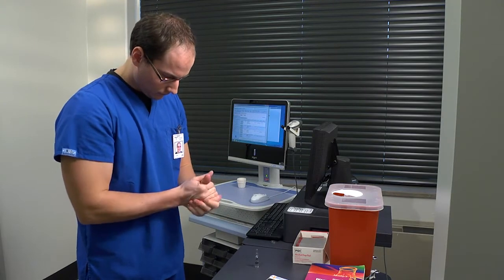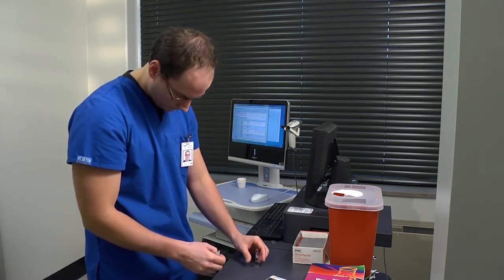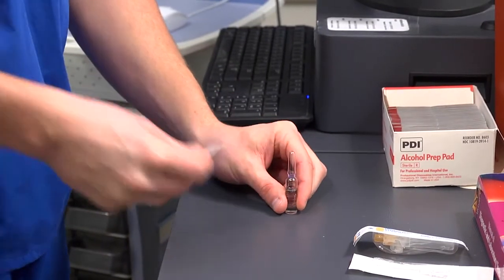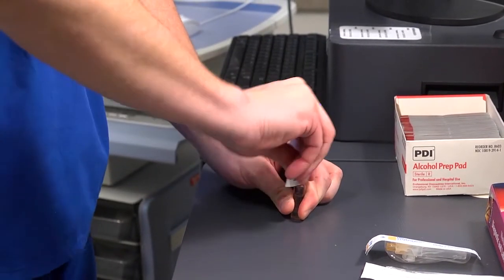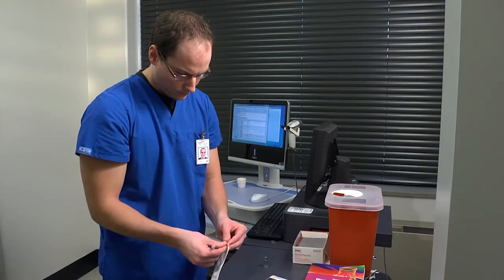Gather your supplies and perform hand hygiene. To prepare the injection, tap the top of the ampoule until the fluid moves out of the neck. Place a barrier, such as a small gauze pad or unopened alcohol swab, around the neck of the ampoule, and snap it quickly and firmly, pulling the tip towards you so that it breaks open in the opposite direction.